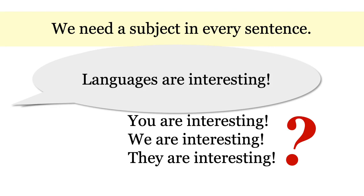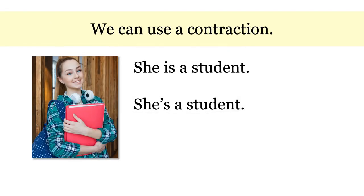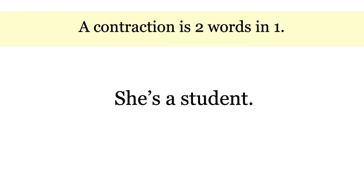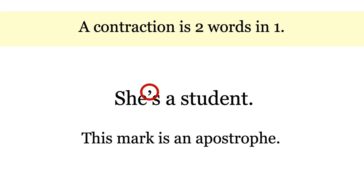Let's look at one more thing about the verb BE. We can use a contraction. Look at these two sentences: She is a student and she's a student. They sound almost the same. We see the BE verb IS in the first sentence. In the second sentence, there is just an S. This is called a contraction. A contraction is two words in one. This mark — an apostrophe — is used in contractions.